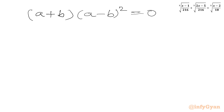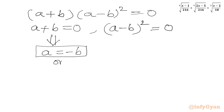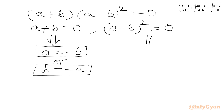Now it is conclusion time. Either a plus b equals 0, or (a minus b) whole squared equals 0. From the first equation we can write a equal to minus b, or b equal to minus a. From the second equation we can write a equal to b with multiplicity 2.